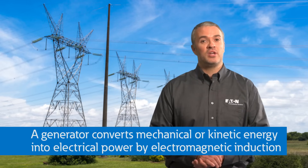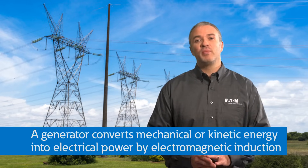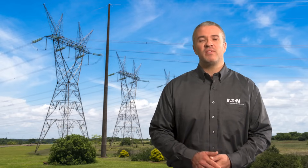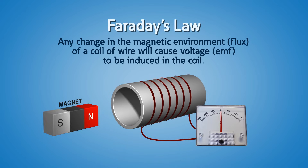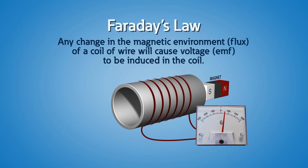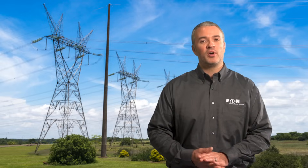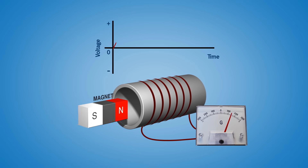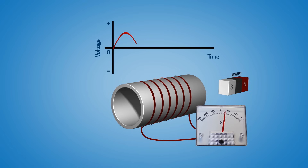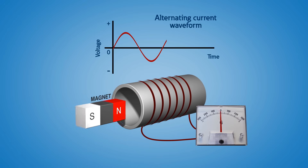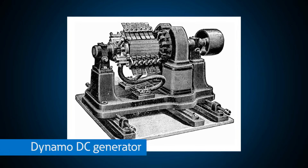What is a generator and how does it work? A generator converts mechanical or kinetic energy into electrical power or electricity by electromagnetic induction, which is simply varying a magnetic field within a coil of wire. This phenomenon is explained by Faraday's law. Historically, the first generator invented was a direct current or DC generator, called a dynamo.